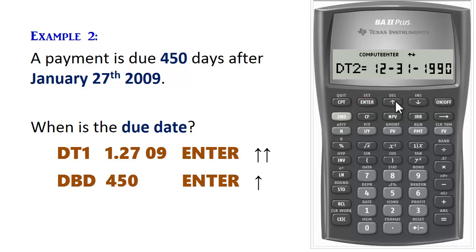Scroll up again to the second date and then Compute. The due date is Thursday, April 22, 2010. So 450 days after January 27, 2009 is April 22, 2010.